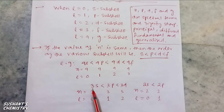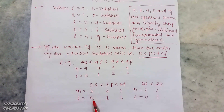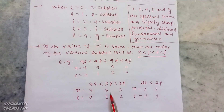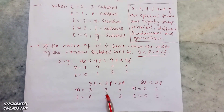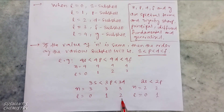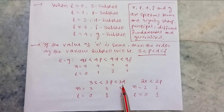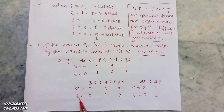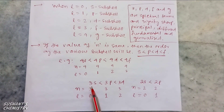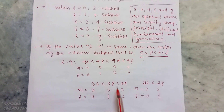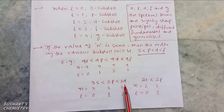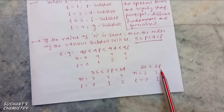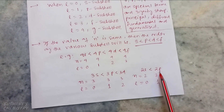For 3s sub-cells the value of n equals 3, l equals 0; for 3p sub-cells n equals 3, l equals 1; for 3d sub-cells n equals 3, l equals 2. The n value remains constant but the value of l changes, meaning energy changes gradually from 3s to 3d sub-cells — lowest energy for 3s, highest energy for 3d.